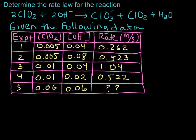Let's do an example where we figure out the rate law for a reaction using the method of initial rates. We are looking at the reaction where chlorine dioxide reacts with hydroxide to give chlorine dioxide and water. Some data was collected where we have various concentrations of chlorine dioxide and hydroxide, and the rate of the reaction was measured.